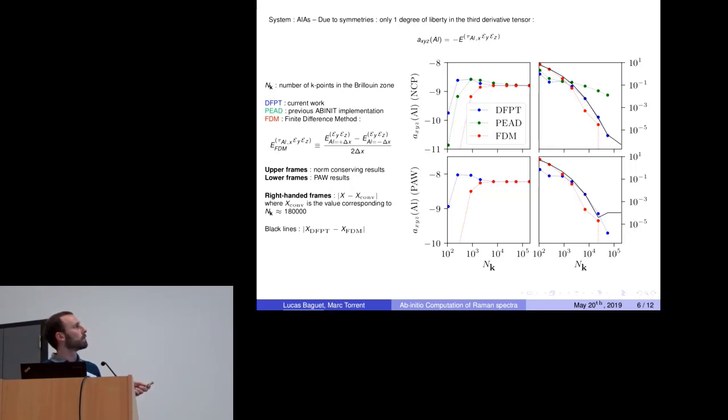We see that all the different methods converge to the same value, both in norm-conserving and PAW potentials. Here I show the convergence rate of the finite difference method. In the case of norm-conserving, the convergence rate of DFPT is faster than the other one. The main result is the difference between DFPT and finite difference method that is shown on the black line here. I get very good precision. And so that result validates the implementation.